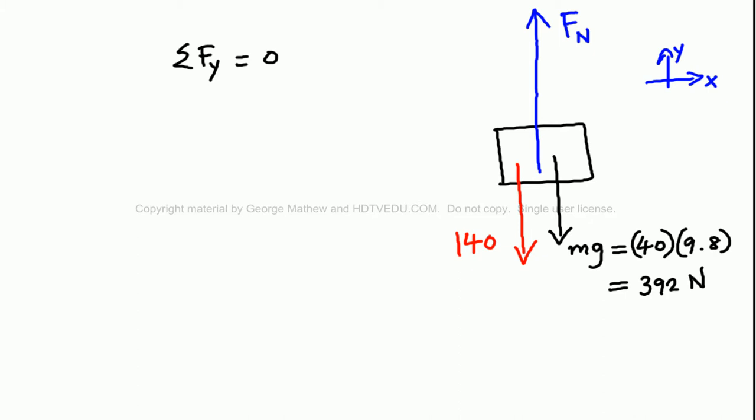So what can you say about force up versus force down? You say normal force is the only force that is vertically up, and that should be equal to 140 Newtons, the force applied, plus the gravitational force of 392 Newtons.